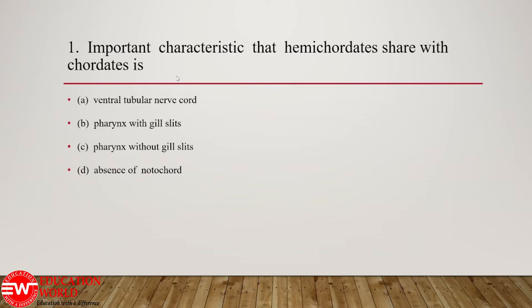Hemichordates and chordates share some characters because the hemichordate group is nearer to the chordate group in the animal tree. The similarity seen among hemichordates and chordates is the pharynx with gill slits. This is the correct option, because normally chordates have gill slits, a tail, a dorsal hollow nervous system, and a ventral heart. So hemichordates share the feature of pharynx with gill slits with the chordates.